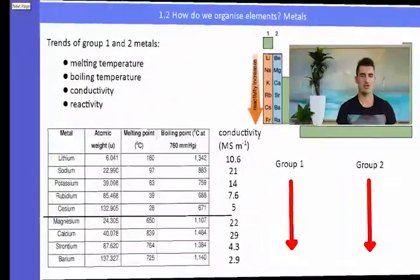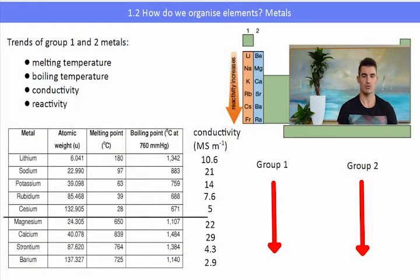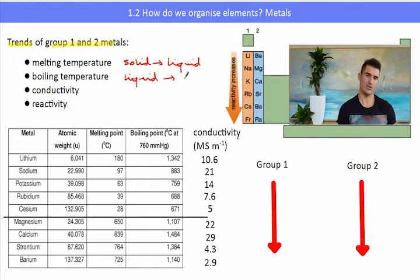We need to be able to explain some of the trends in group 1 and group 2 metals. And the trends that we need to be able to identify and explain are melting temperature, boiling temperature, conductivity and reactivity. So the melting temperature is when something goes from a solid to a liquid. The boiling temperature is when a liquid turns into a gas. The conductivity is how well something conducts electricity. And reactivity is how vigorously something reacts.